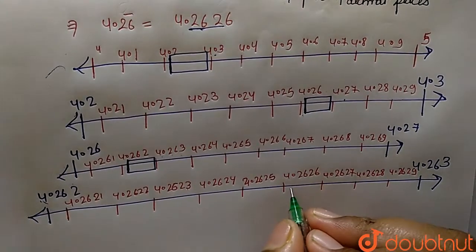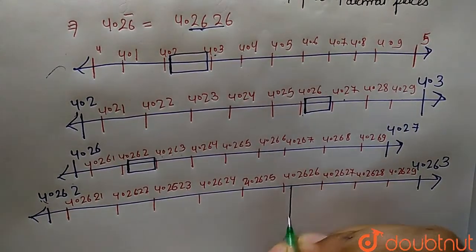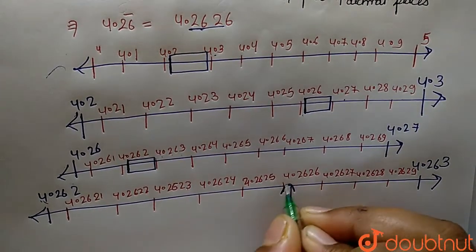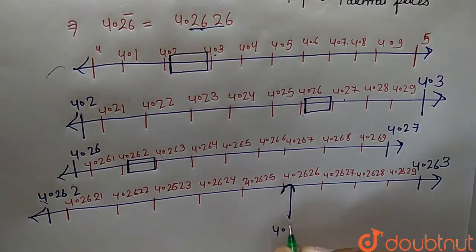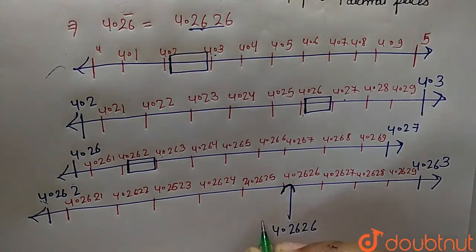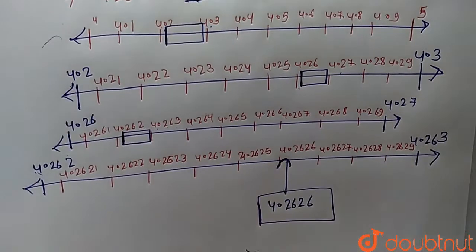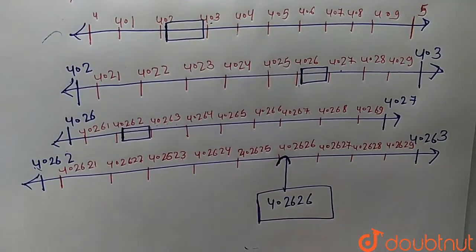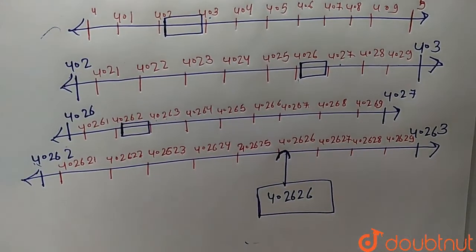The number 4.2626 will come over here. This is our required number line for the visualization of 4.2626.